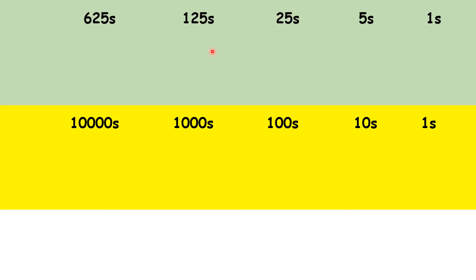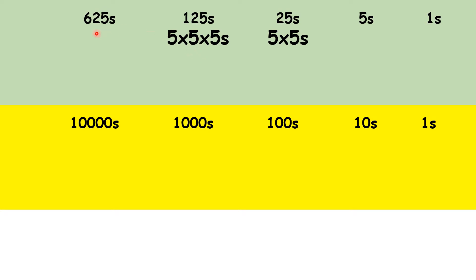So here we have our Rigglesfordian place value at the top and our normal place value at the bottom. We have units, fives, and then twenty-fives because five times five is twenty-five. Then we have one hundred and twenty-fives because five times five times five is one hundred and twenty-five. Then we have six hundred and twenty-fives because five times five times five times five is six hundred and twenty-five.